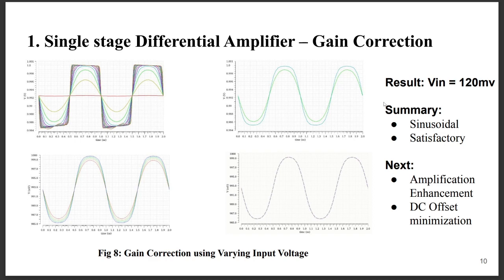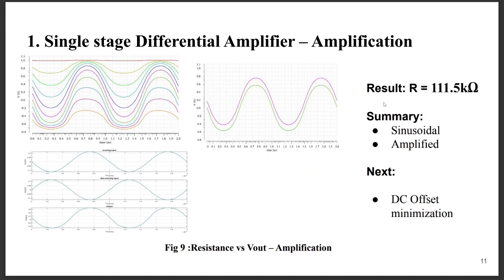As we can see from the four graphs, at around 120 millivolt of input voltage, the output graph seems to be sinusoidal and satisfactory. Next we had to amplify the signal and also minimize the DC offset. For amplification, we wanted to check the input impedance, that is the resistances connected at the inputs. By varying the value of the resistances and then checking the outputs, we found that at about 111.5 kilo ohm, the output was pretty sinusoidal and amplified.